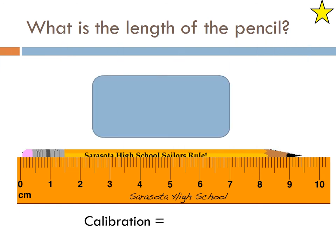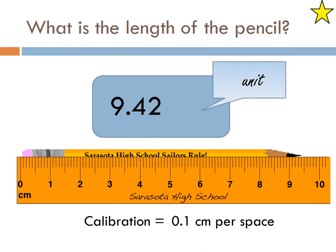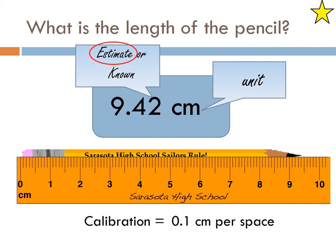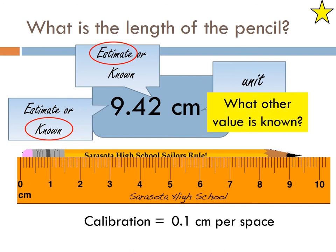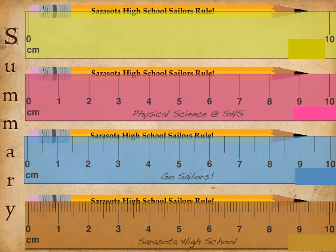Calibration: 0.1 centimeters per space. And our value is approximately 9.42. Again, the unit is centimeters. So is that 2 an estimate or a known? Again, it's the last digit, so it always needs to be an estimate. If you knew it for certain it was a 2, then you got to go further. 9 and the 4 are both going to be knowns.